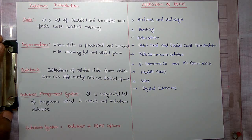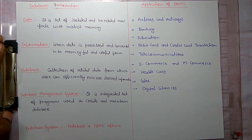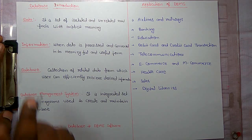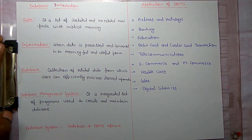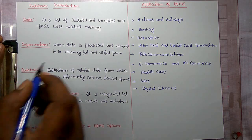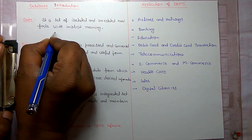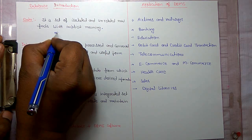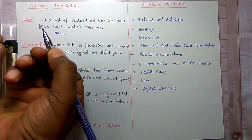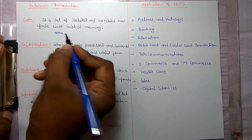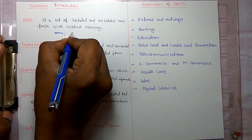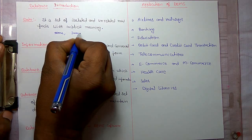Hi, today we are going to learn introduction of database and application. So what is data? It is a set of isolated and unrelated raw facts with implicit meaning. For example, if you have a name, that is data. And if you have an image file, that is also data.